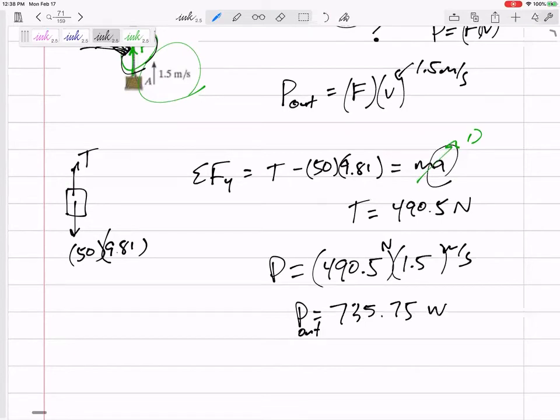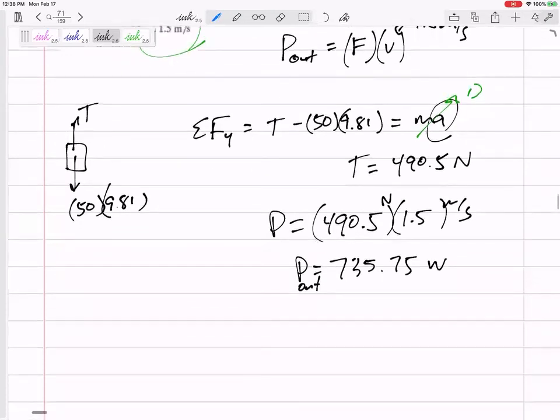That's the power that the motor is actually doing. What power do I need to input to the motor? What power do I need to give to the motor in order for it to do some power of 735? Well, 0.8 would be 735 over what power in.